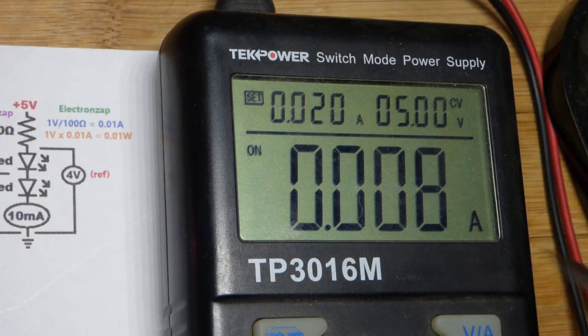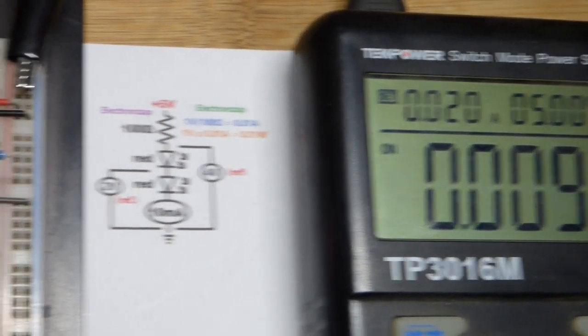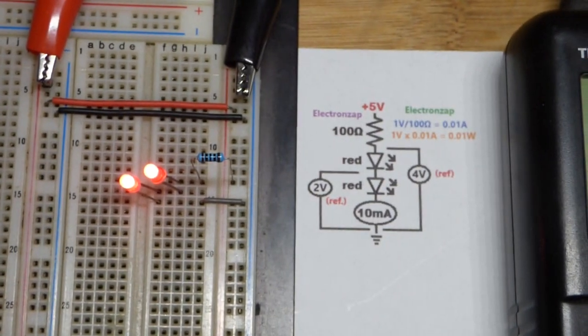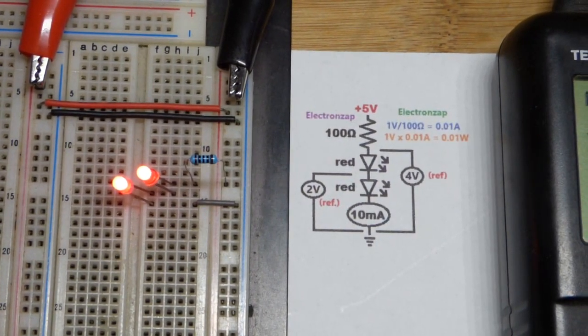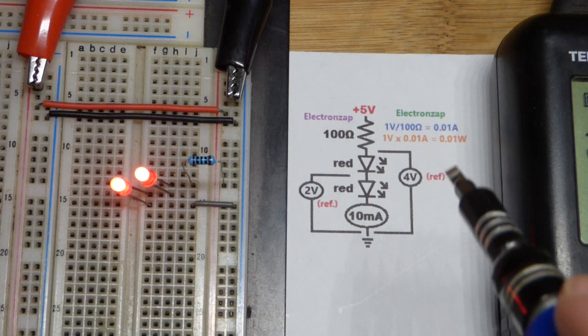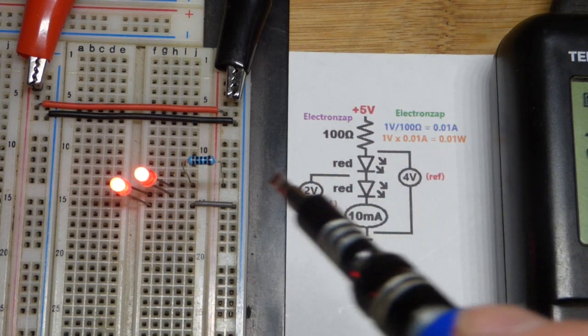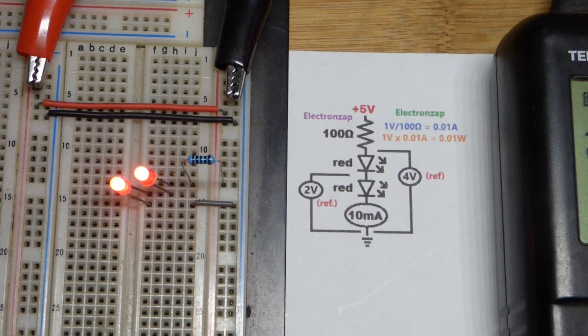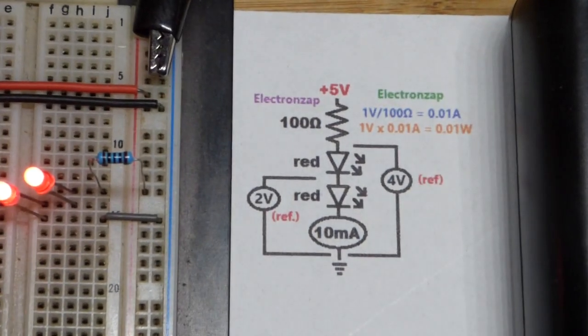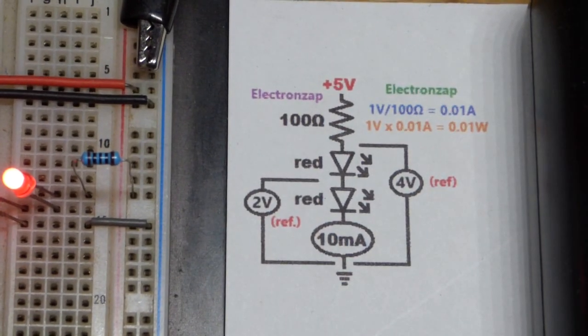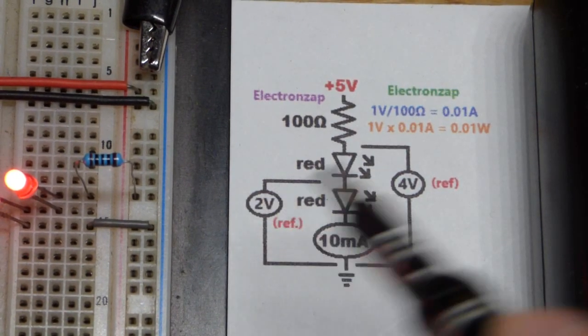It's not as accurate as a multimeter though, so it may be a spec shy of 10 milliamps. Maybe one reason why you see nine there. The goal for this video was to get a two volt reference point and a four volt reference point.